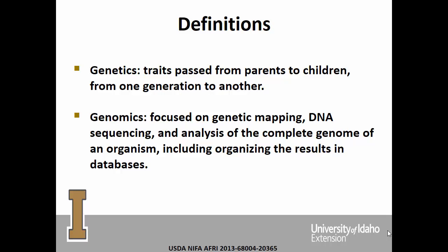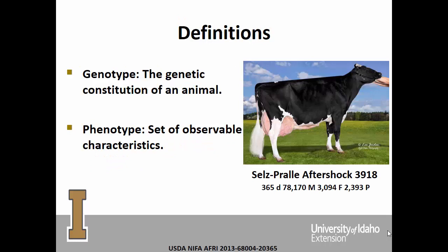Genomics is a field that has exploded in recent years. There are universities that have entire buildings devoted to bioinformatics — understanding the genome not only of animals but of plants. A couple more definitions: genotype is the genetic constitution of an animal, and phenotype is that set of observable characteristics — something we can see or measure.